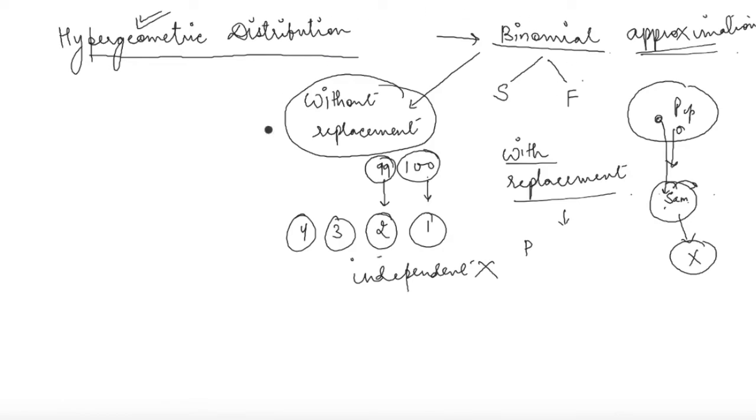The broad distinction between binomial and hypergeometric is that in binomial we do sampling with replacement, while in hypergeometric we do sampling without replacement.